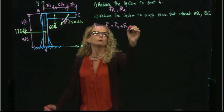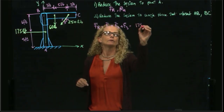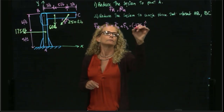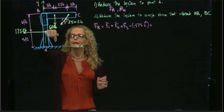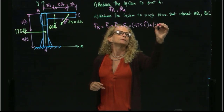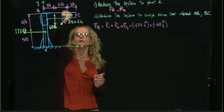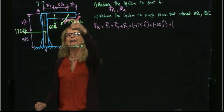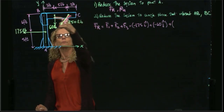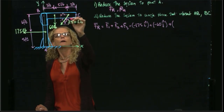So that will be equal to... F1 is 175 in the I direction, negative. F2, which is this force right here, will be negative 60 in J. And this force right here, which is F3, has two components. It will be negative in I because it's pointed this way. So we have a negative Fx and a Fy.